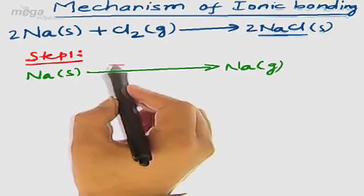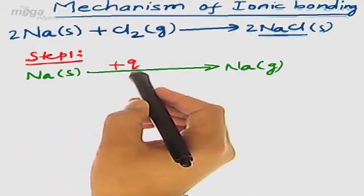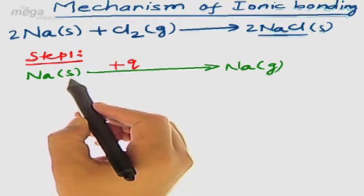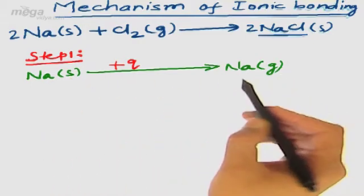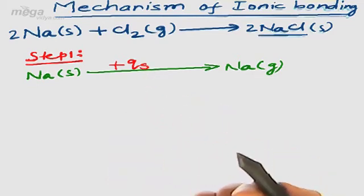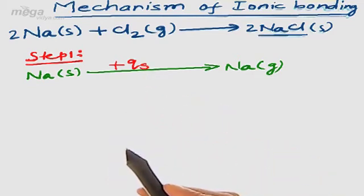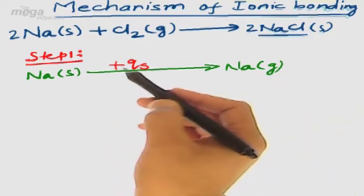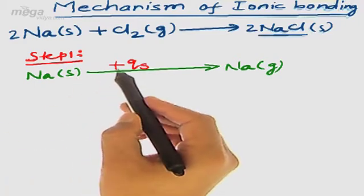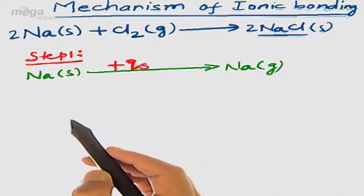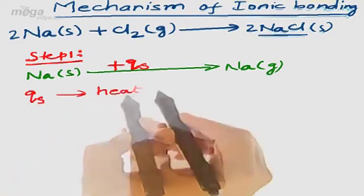Solid sodium will accept or gain heat energy and will be converted into gaseous sodium — represented as plus QS heat. As the state solid is being converted into gaseous, a phase transition is taking place, and we can call this process sublimation. Sublimation is a process where there is direct phase transition from solid to gas or vice versa, and that is what we are observing here. The process is sublimation and since heat energy is absorbed, we represent it by plus Q, and for sublimation we write QS — heat of sublimation.